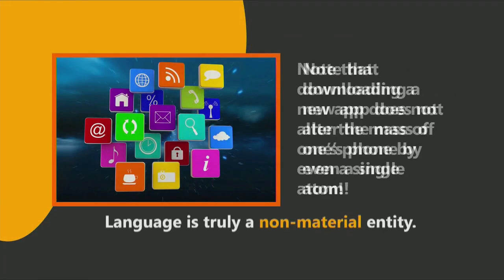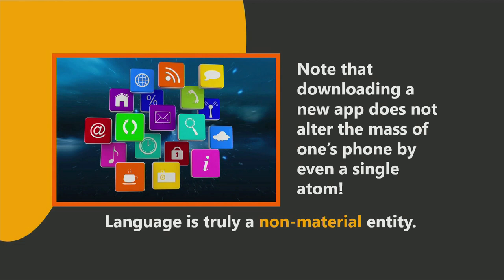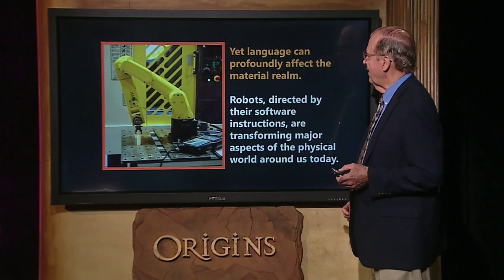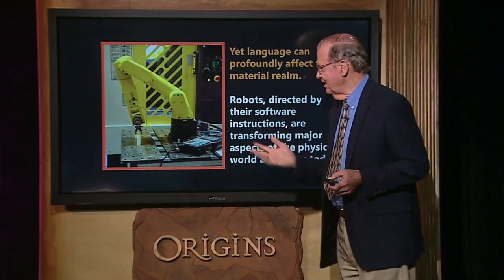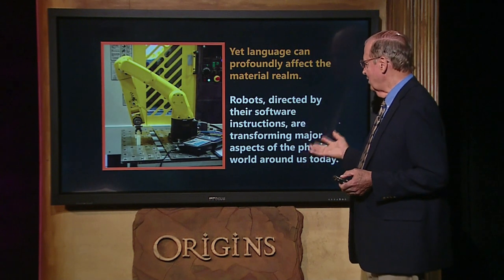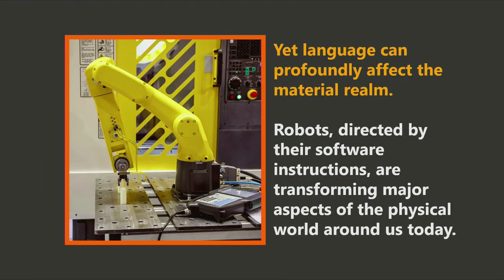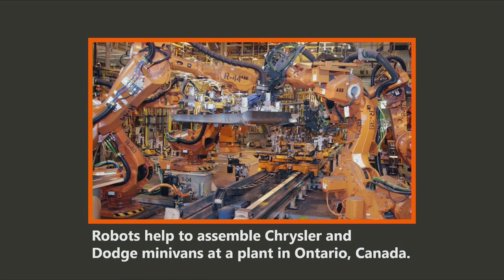Note that downloading a new app does not alter the mass of one's phone by even a single atom — language is truly a non-material reality. Yet language can profoundly affect the material realm. Robots directed by their software are transforming major aspects of the physical world around us, manufacturing many of the products we use, including our automobiles — here you see robots assembling minivans in a plant in Ontario, Canada.